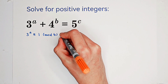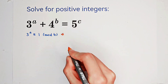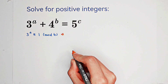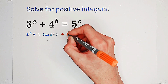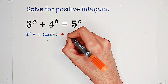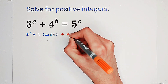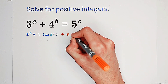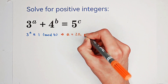So that means 3 to the power of a is equivalent to 1 mod 4. This holds if and only if a is even, so a equals 2 times a1.